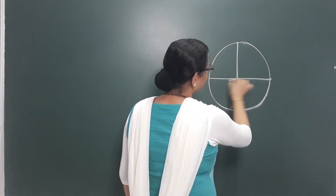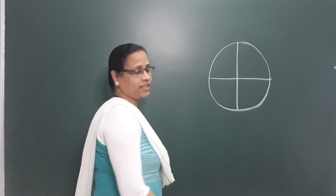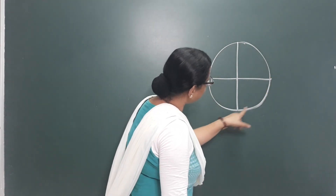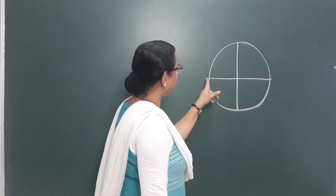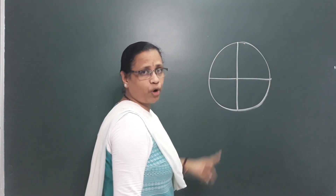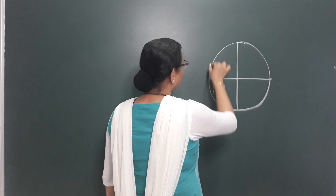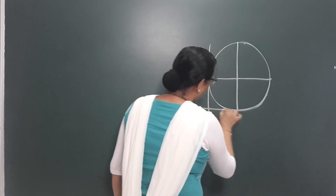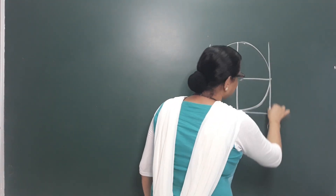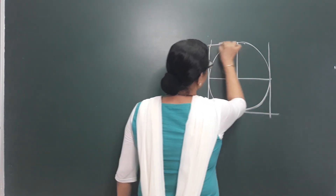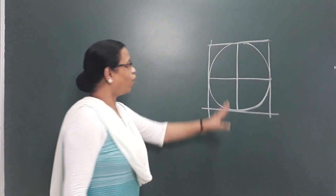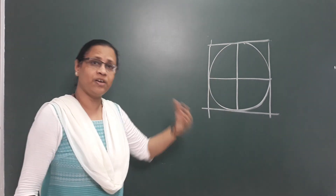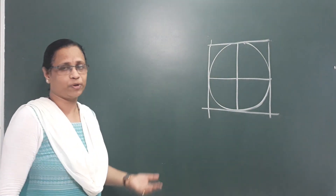The two perpendicular diameters meet at four points — these are the four endpoints. At each of these four endpoints, we draw a tangent. These tangents form a quadrilateral, so the four sides form a quadrilateral.